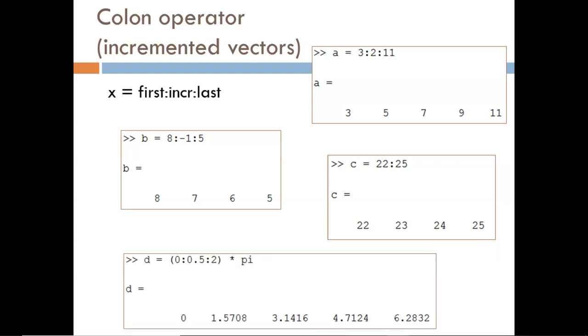And finally, we see how the colon operator can be performed first to create a vector, then that vector is modified by an arithmetic operation. In this case, multiplication. Now I see a vector going from 0 pi to 2 pi in steps of 1 half pi.